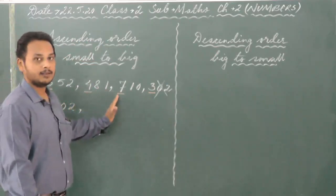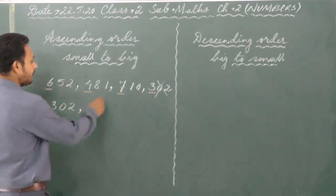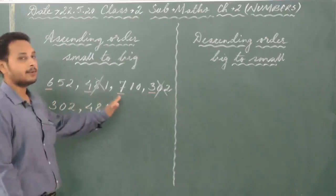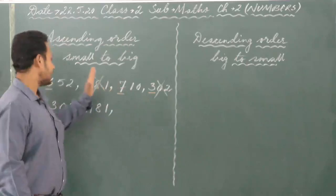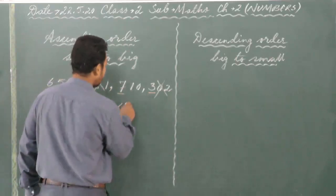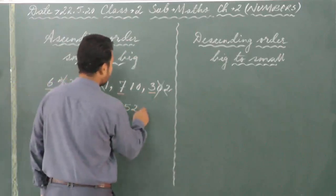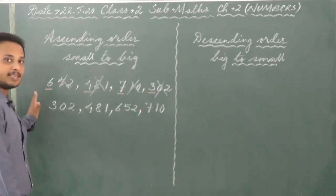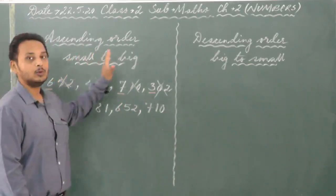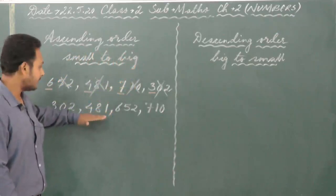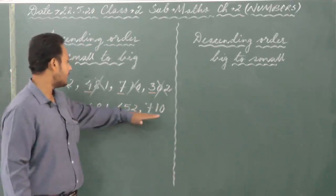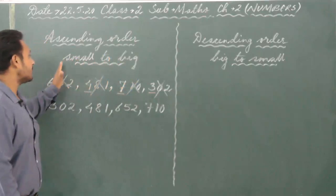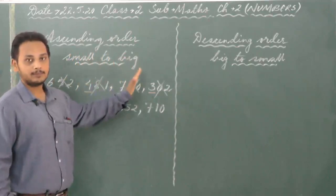Then there are three numbers remaining. Out of 6, 4, and 7, which number is small? It is 4, that means 481. Then now we have 6 and 7 remaining. Which is small? 6 is small, that means 652. Put a comma and the remaining last number is 710. Now you will see that it is arranged in order from small to big: 302, 481, 652, and then 710. So this is how we do ascending order — arranging numbers from the smallest to biggest.